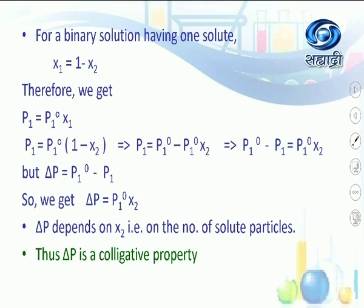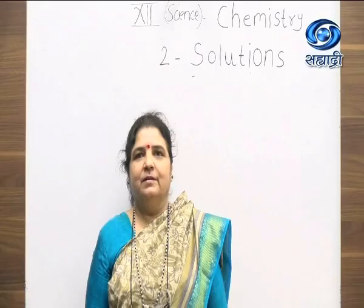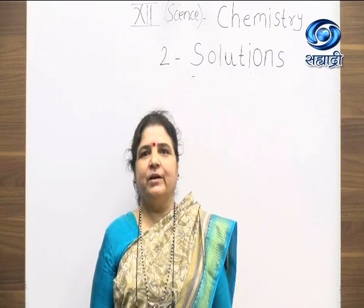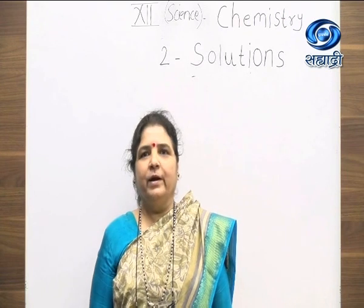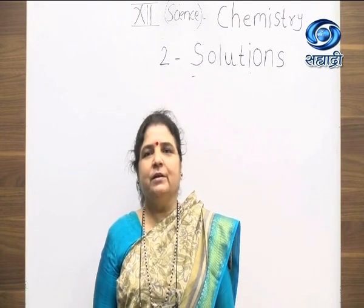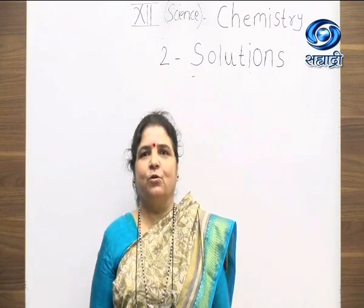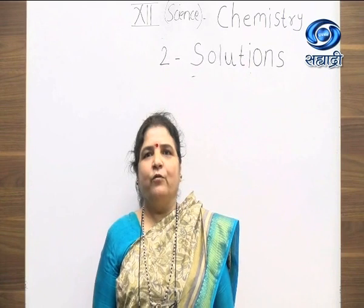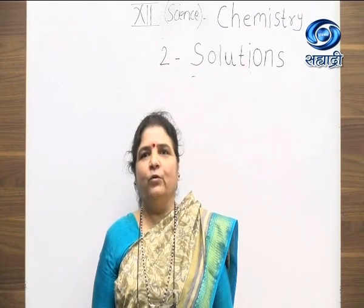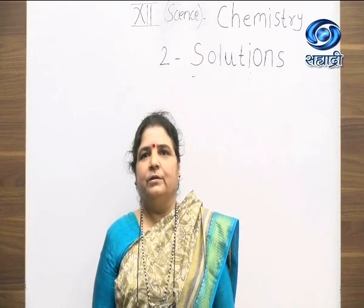Thus delta P depends on X2 — that is, on the number of solute particles — so lowering of vapor pressure is a colligative property. In this session we have discussed ideal solutions, non-ideal solutions, positive and negative deviations from Raoult's law, and the vapor pressure of a solution containing a non-volatile solute. Thank you, students.